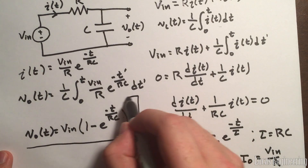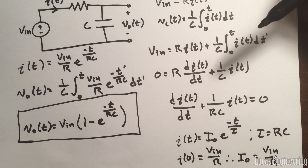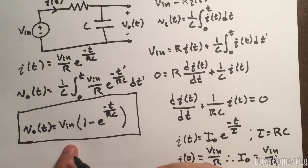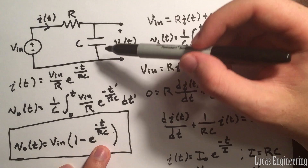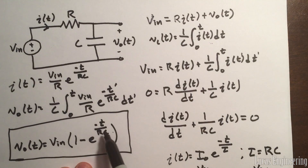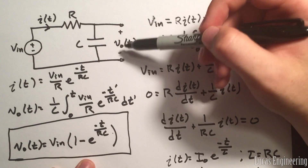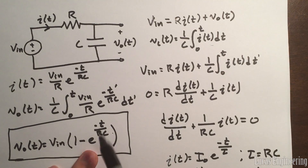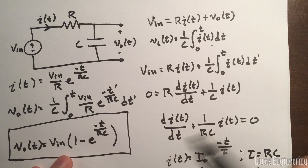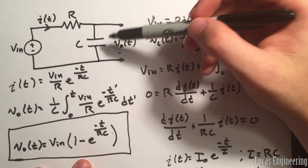That's our answer — box it in. We've found the output voltage, which is the voltage across the capacitor as a function of time. This makes sense physically: at T equals zero, plugging in gives V_n·(1−1) = 0 — no voltage across the capacitor, consistent with it acting as a short. As T goes to infinity, the exponential goes to zero and V_out equals V_n — the full input voltage is transferred to the capacitor.